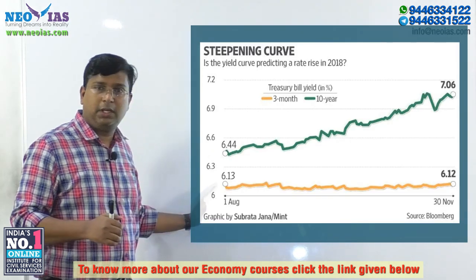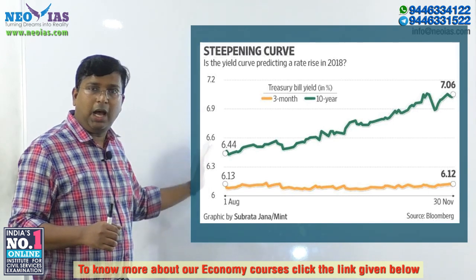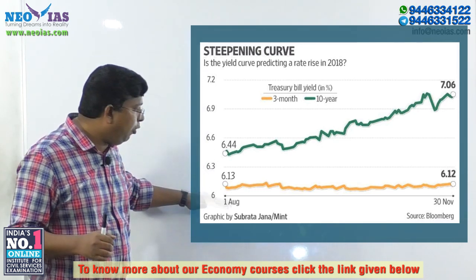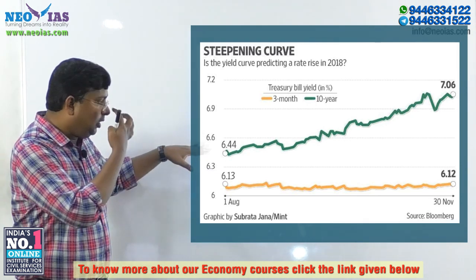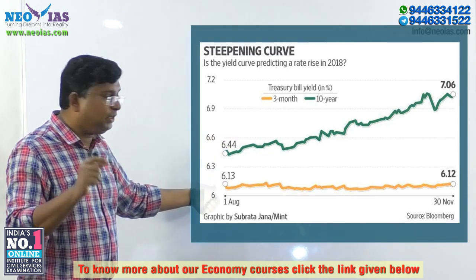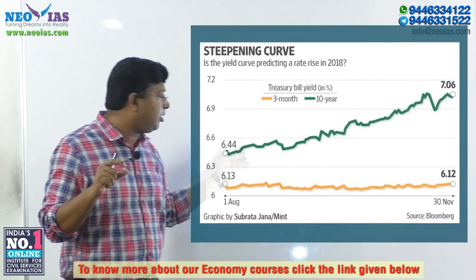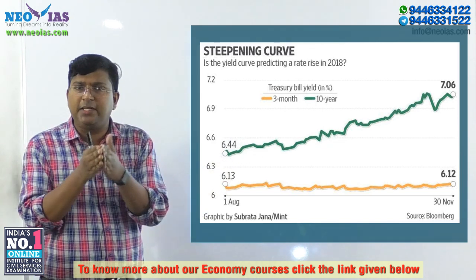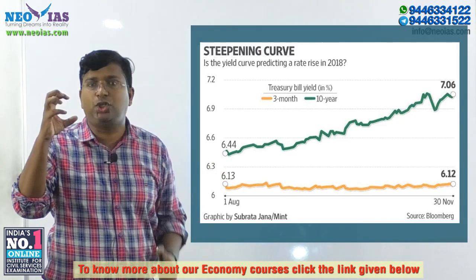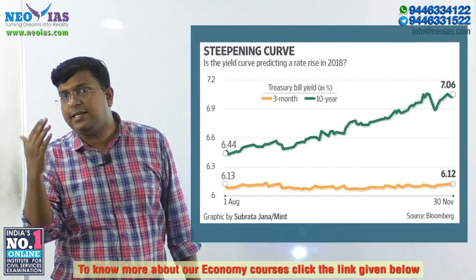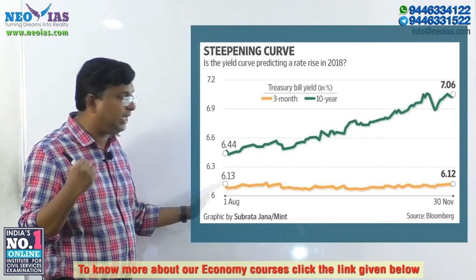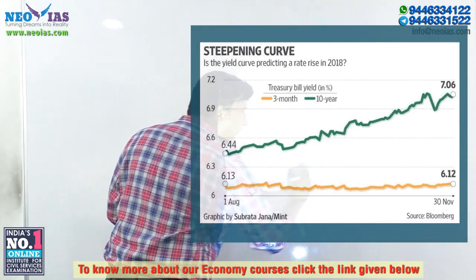A yield curve is a graph that plots Treasury bills or government securities over a time period. Here you can see that the orange color is a three-month Treasury bill and the green color is a 10-year government security. Government securities have different maturities, but the 10-year government security is considered the benchmark, and other interest rates depend upon it.